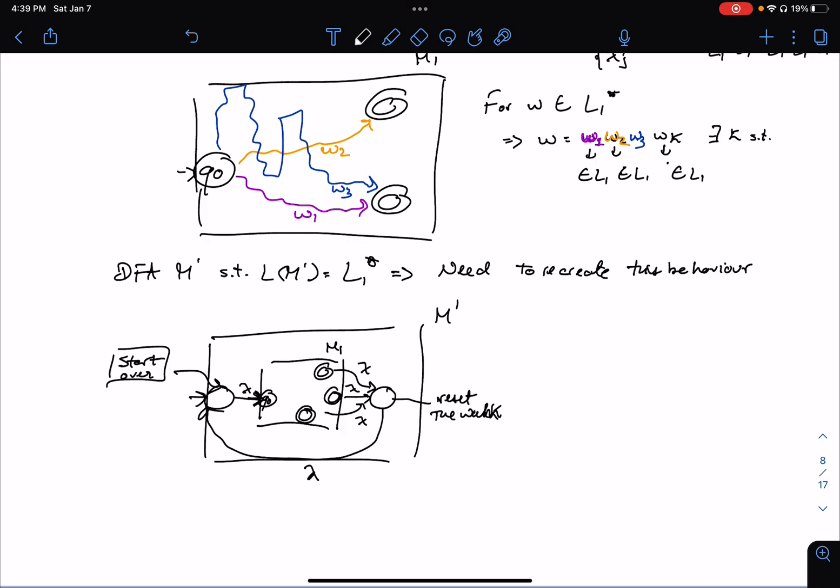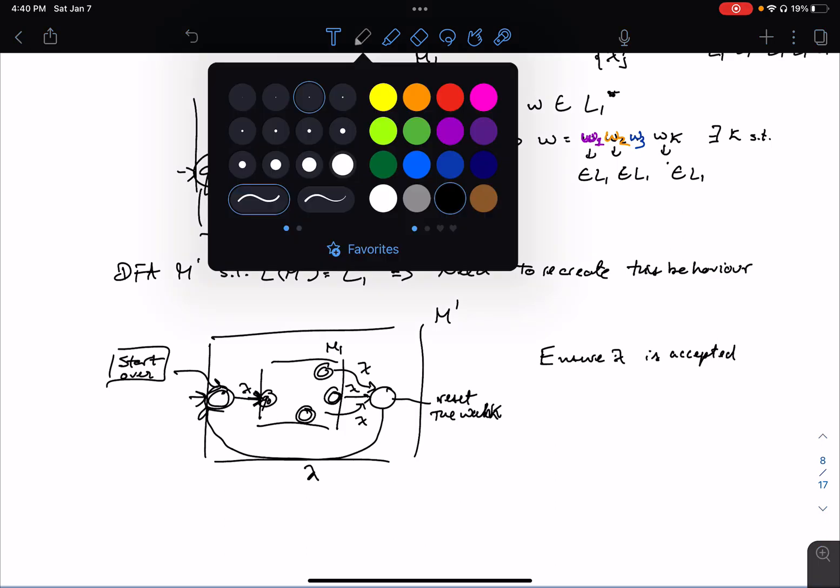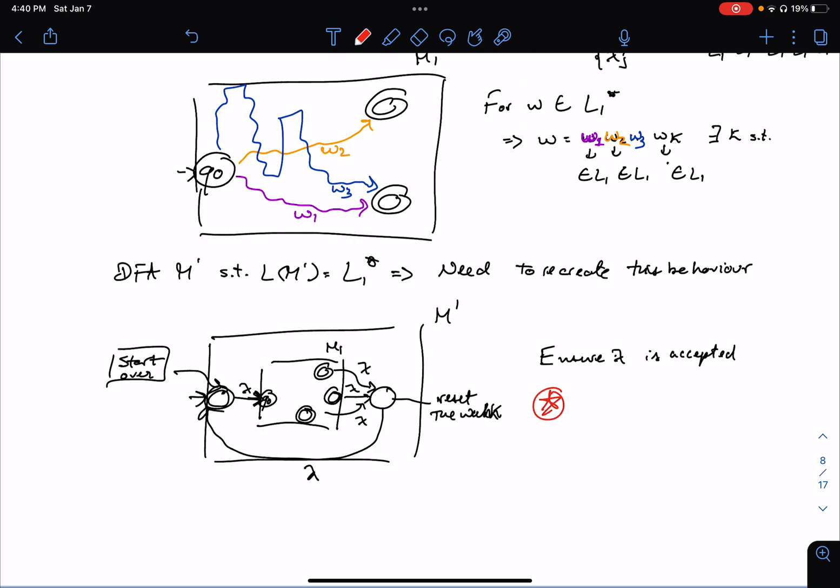Now the only thing that you need to do here, the only extra thing that you need to do is you need to ensure the empty string is accepted. And to do that, you only need to make the start state, to make the start state a final state in M1. And so what I want you to think about is why you just make Q0 a final state and keep it as the start state of M1.